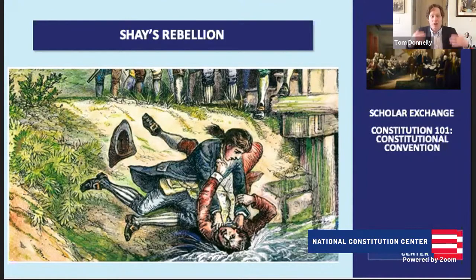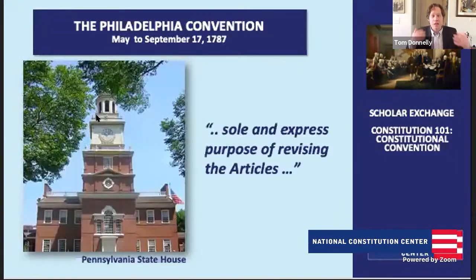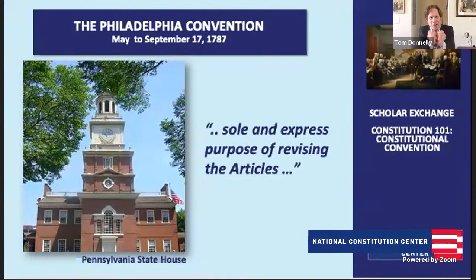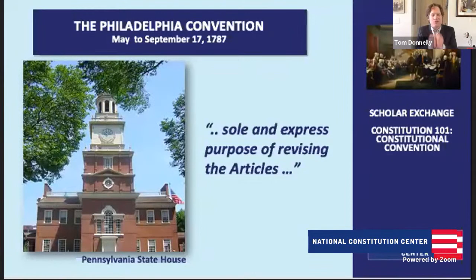They called for a new convention to put together a stronger national government. The Confederation Congress answered the call and said, let's meet in Philadelphia — states should send delegates for the explicit purpose of revising the Articles of Confederation. As we know, James Madison and some of his colleagues had other ideas.